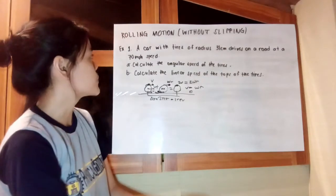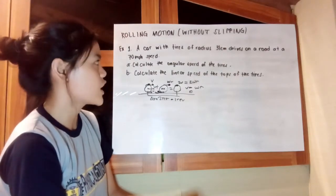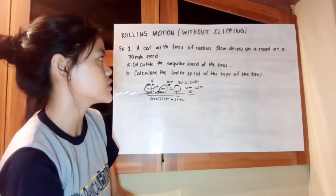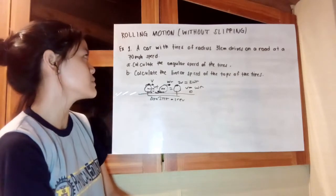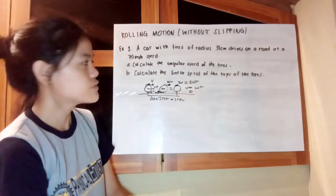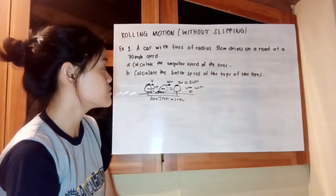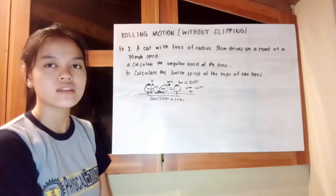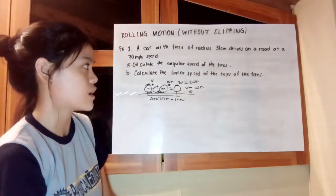A car with tires of radius 31 cm drives on a road at 70 miles per hour speed. First, calculate the angular speed of the tires. Second, calculate the linear speed of the tops of the tires.